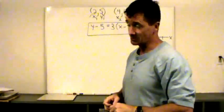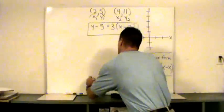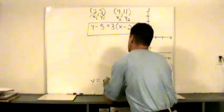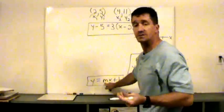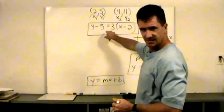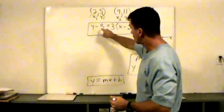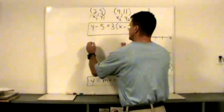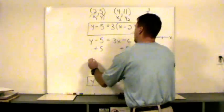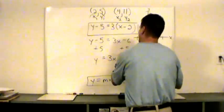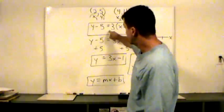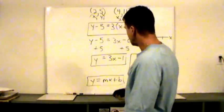There's another format called slope-intercept form: y equals mx plus b, where m is the slope and b is the y-intercept — the point where the line crosses the y-axis. To convert, we isolate y by distributing the 3 and adding 5 on both sides. So y minus 5 equals 3x minus 6, then adding 5 gives y equals 3x minus 1. This is the equation of the line in slope-intercept form — the same line, just a different format.